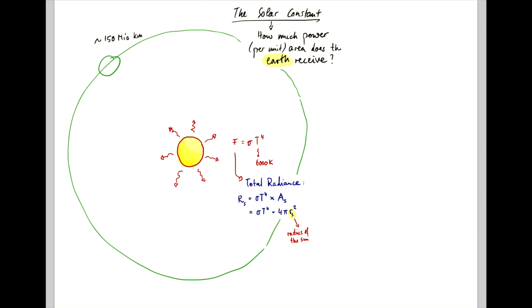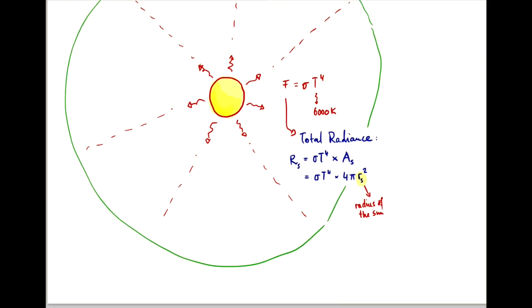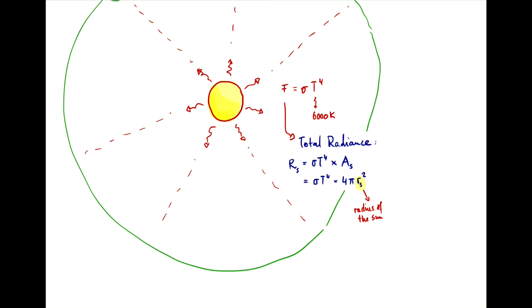So by the time the energy from the Sun has reached the distance at which the Earth is, it has spread out a lot. And so, the radiance is much reduced to that original f that we can compute from the temperature of the Sun.